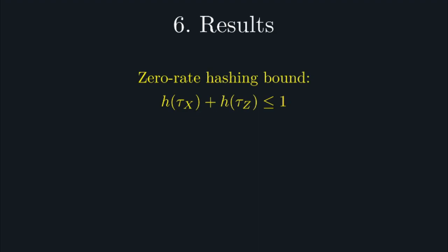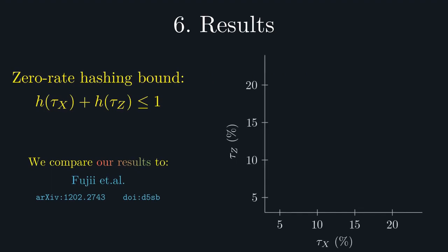Here, tau represents these two thresholds, and h the binary entropy. We can now test our data against this conjecture, comparing with earlier data from Fujii et al., using a sub-optimal decoder known as minimum weight perfect matching.